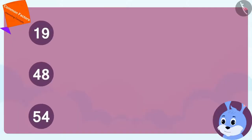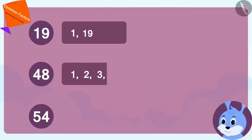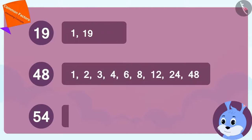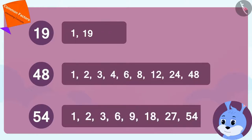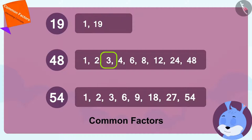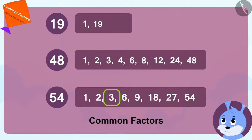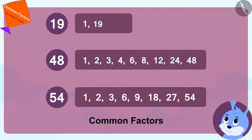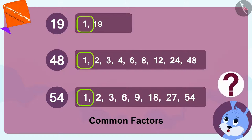To find a solution to this question, Bunny first wrote the factors of the three numbers. Now, Bunny is trying to find the common factors of these numbers. Bunny is thinking — there is only one common factor of these numbers: one.